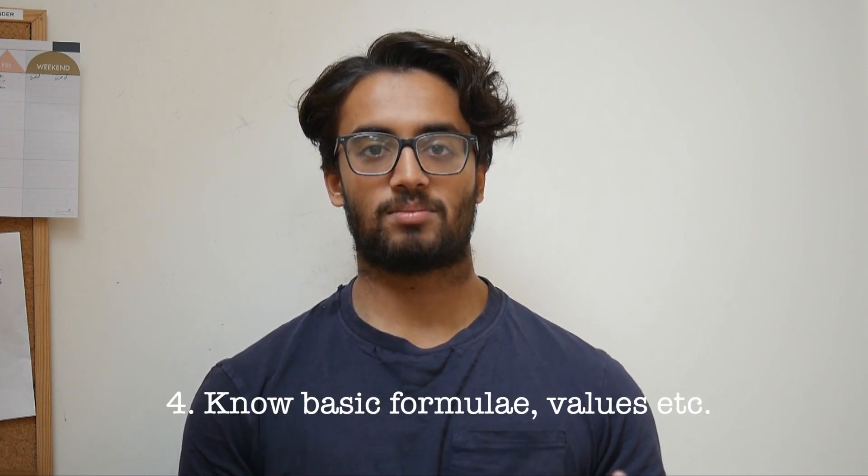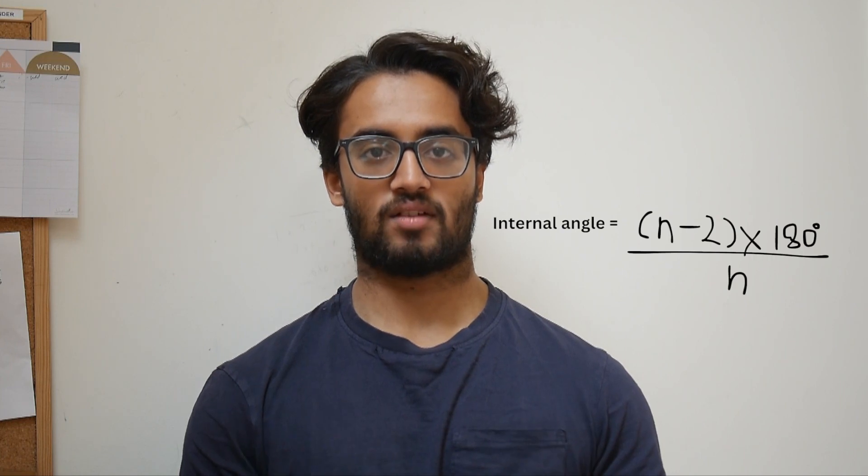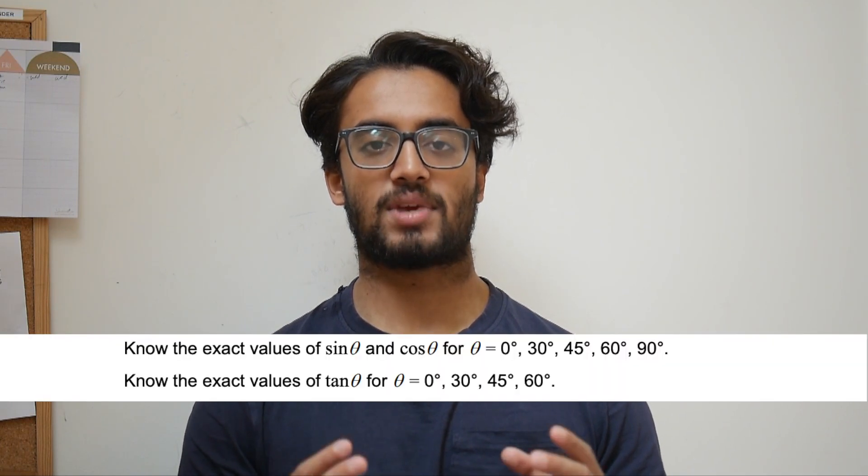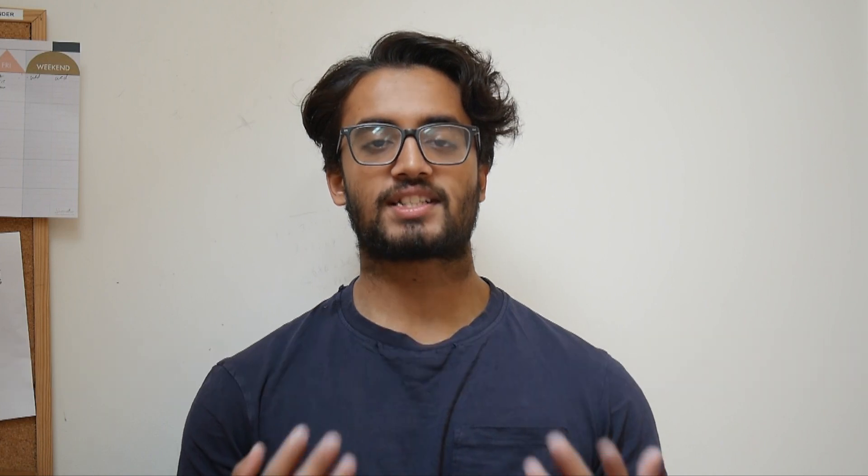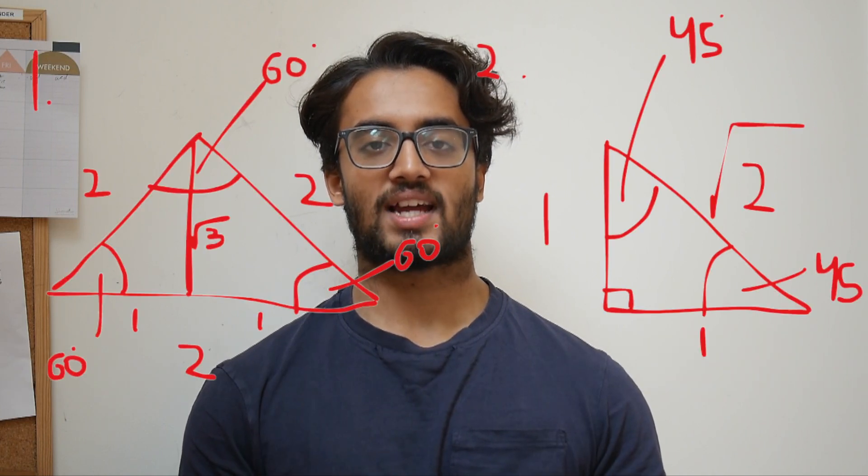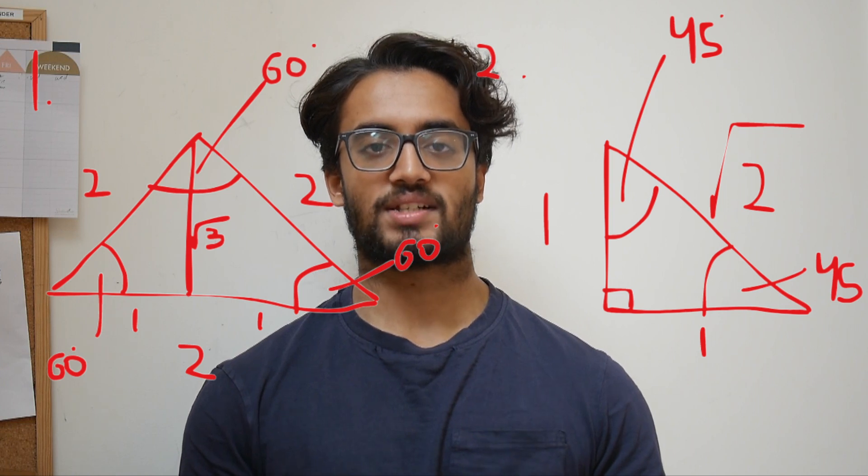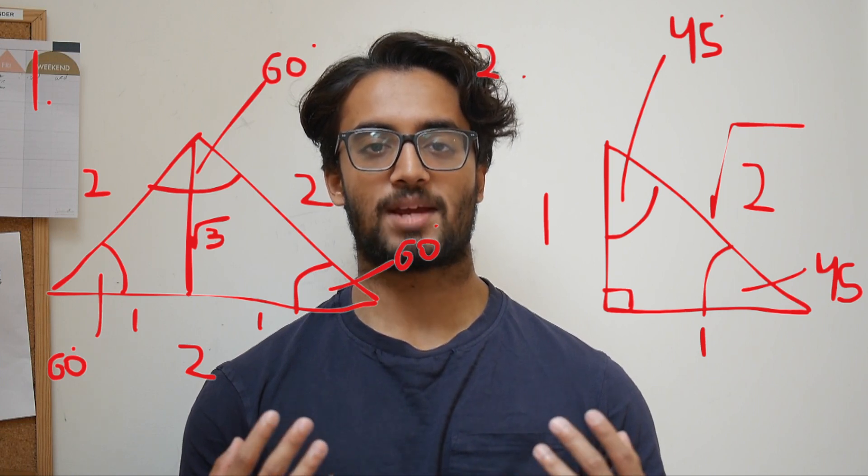Tip number four for doing well at BMAT Section 2 Maths is having a sound understanding and memory of the basics. So this includes things like key formulae, the properties of shapes, so for example finding the internal angle of a shape using the equation I have up on screen right now, and also general values of sine, cosine and tan for the angles that they mention in the BMAT Section 2 Assumed Knowledge Guide. These can be derived from the two triangles I have up on screen right now. I personally learned these triangles instead of memorizing the values as I found this a lot more time efficient.